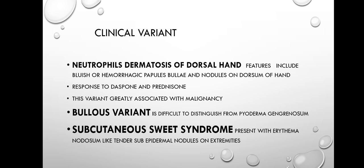Clinical variants: number one, neutrophilic dermatosis of the dorsal hand — features include bluish or hemorrhagic papules, bullae, and nodules on the dorsum of the hand. This variant usually gives a good response to dapsone and colchicine, and is greatly associated with malignancy. Another variant is the bullous variant, which is very difficult to distinguish from pyoderma gangrenosum. The third variant is subcutaneous Sweet Syndrome, presenting with erythema nodosum-like tender subcutaneous nodules on the extremities.